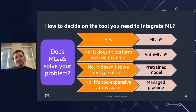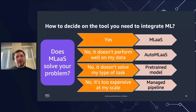The key thing is that you don't have to commit to a particular solution right away. In the beginning, you might start with machine learning as a service to get some early customer feedback. Then you can switch to AutoML as a service so it performs better on your task once you have more data. And finally, once you hit large scale, you can switch to a managed pipeline to optimize costs.